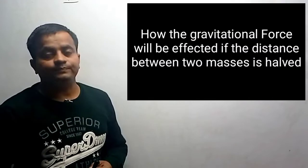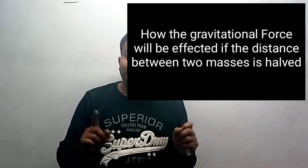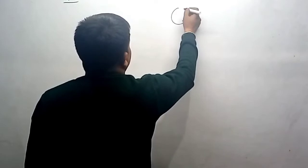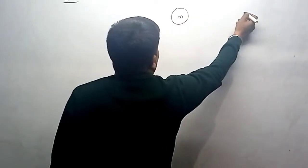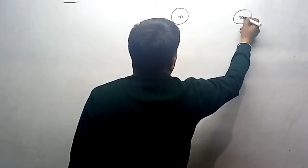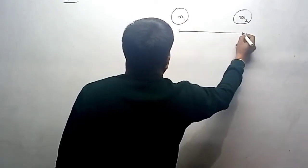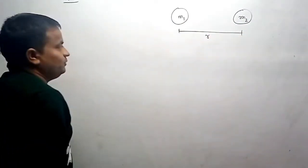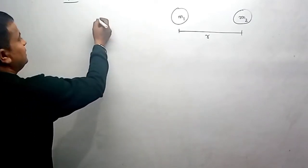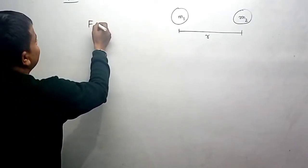You can see how the force between two masses changes when the distance between them is halved. Very easy question. Suppose we are having masses m1 and another mass m2, and they are separated by a distance of r. So as per universal law of gravitation, F equals G m1 m2 by r square.